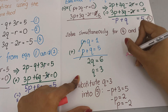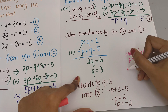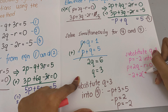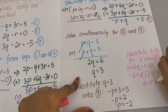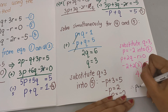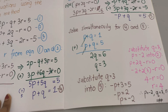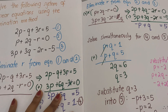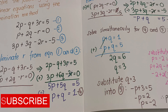Substitute p equals negative 2 and q equals 3 into equation 2: negative 2 plus 2 times 3 minus r equals 0, so negative 2 plus 6 is 4, and 4 minus r equals 0, so r equals 4. The final answers are p equals negative 2, q equals 3, and r equals 4. I hope you understand how the elimination method works — just make sure you eliminate one variable using two pairs of equations. Keep practicing and I'll see you in the next video.